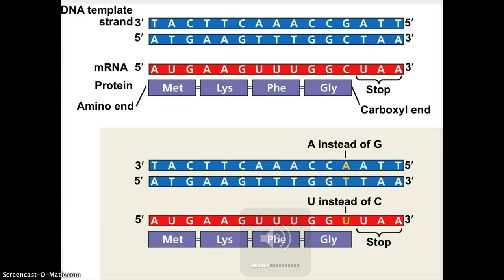The first thing to think about when looking at mutations is that mutations occur in the DNA. However, we're not really concerned with them until that DNA is transcribed into mRNA and then translated into a string of amino acids that makes a protein. So we're going to look at the DNA sequence, figure out the codons in mRNA, and look at what amino acids are produced.